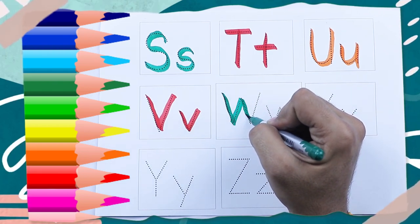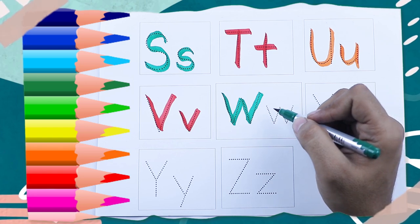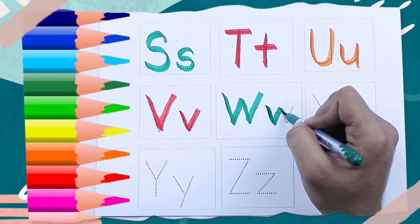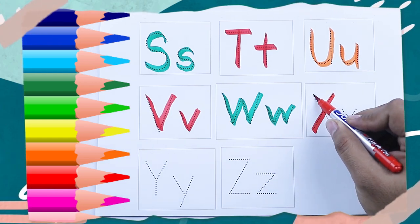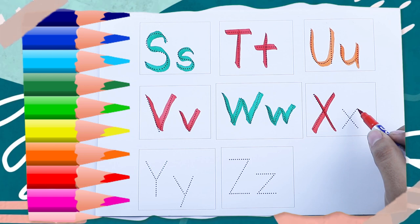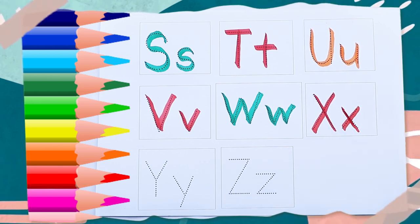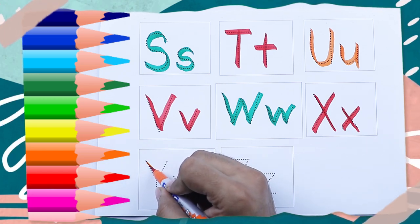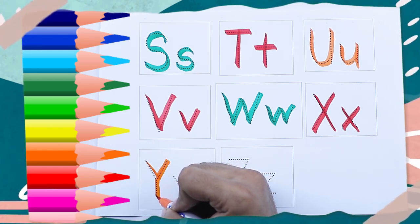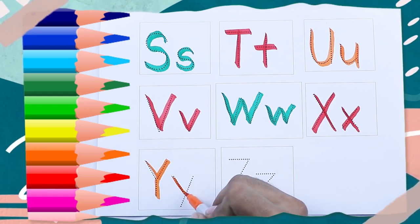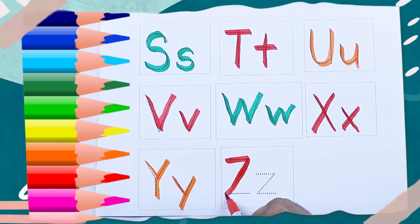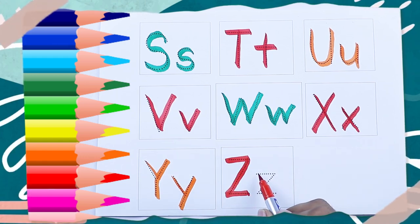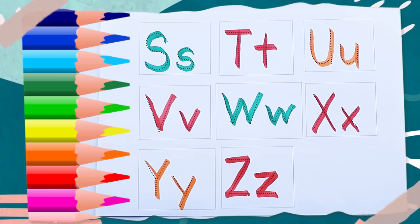Green color capital W, W for watch. Green color small w, w for watch. Red color capital X, X for xylophone. Red color small x, X for xylophone. Orange color capital Y, Y for yak. Orange color small y, y for yak. Red color capital Z, Z for zebra. Red color small z, Z for zebra. Thank you! Please like and subscribe. Bye bye!